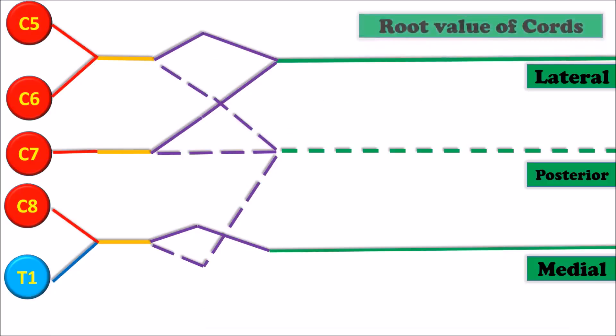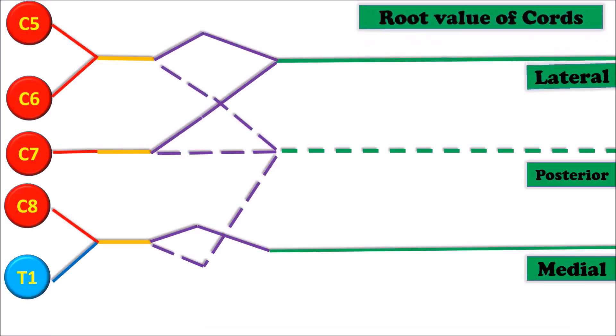The root value of the lateral cord is C5, C6, C7. The root value of the medial cord is C8, T1. The root value of the posterior cord is C5 through T1. Let us discuss the branches of the cords.